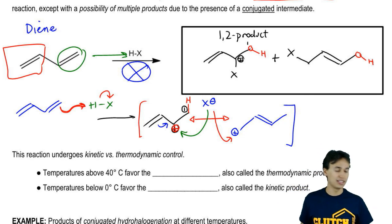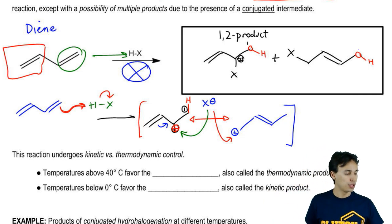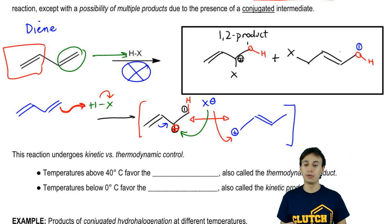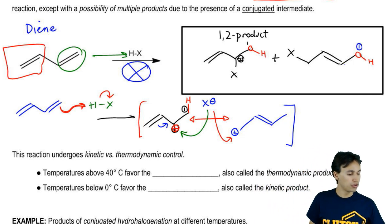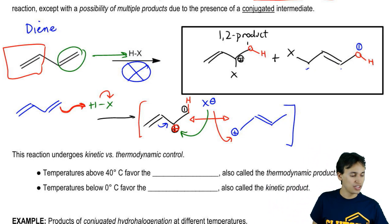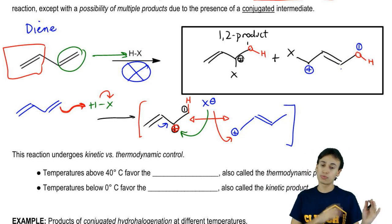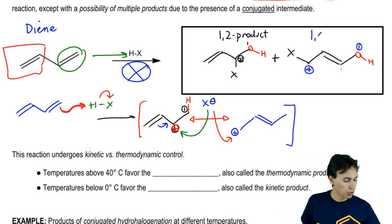After resonance, you get a different distance. Carbon 1 is still the same — H and X always attack the same position — but now counting two, three, the halogen is attached to the fourth position. This product is called the 1,4 product.